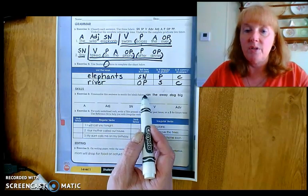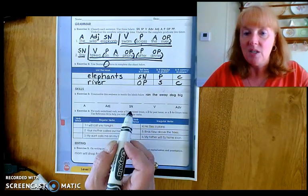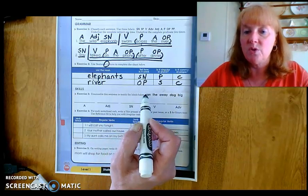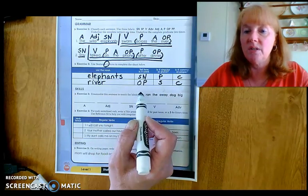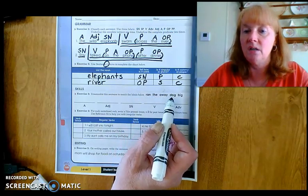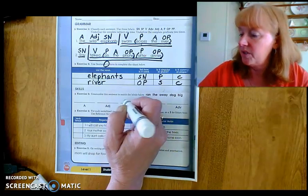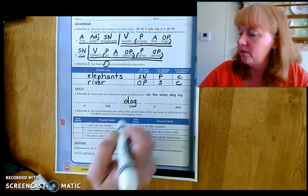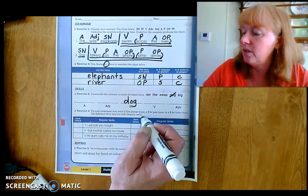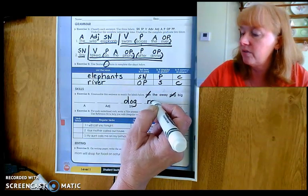Now we have one of these where we're going to put these words in order to make a sentence that makes sense. We always want to start with the subject noun. So which one of these words could be a subject noun? Ran. The. Away. Dog. Big. It has to be dog, doesn't it? It's the only noun in that sentence. And what is the dog doing? Or what did it do? It ran. So that's the verb.